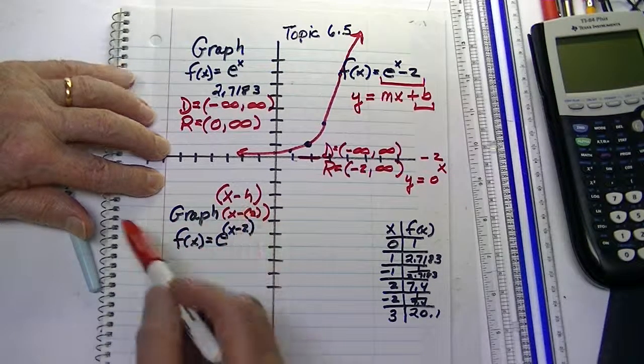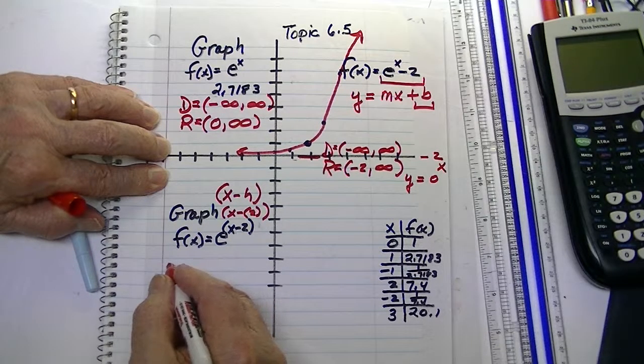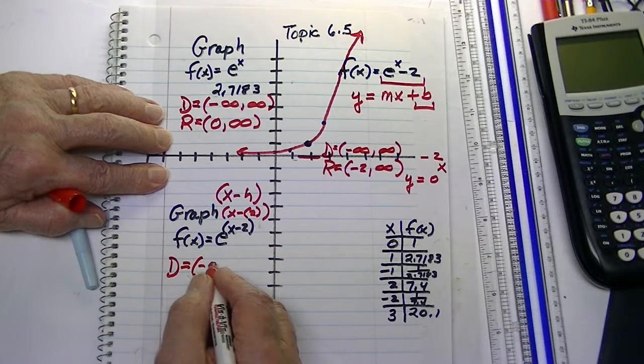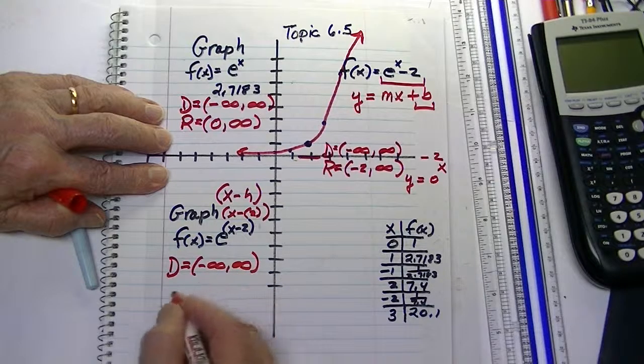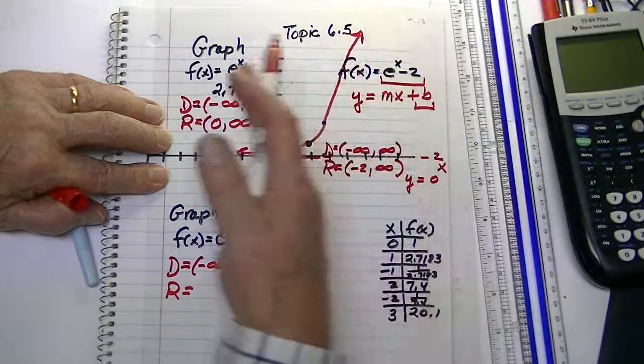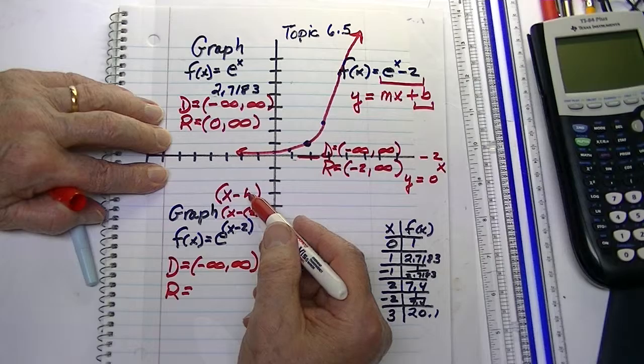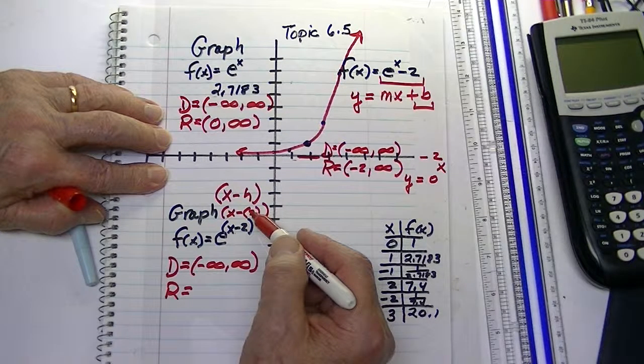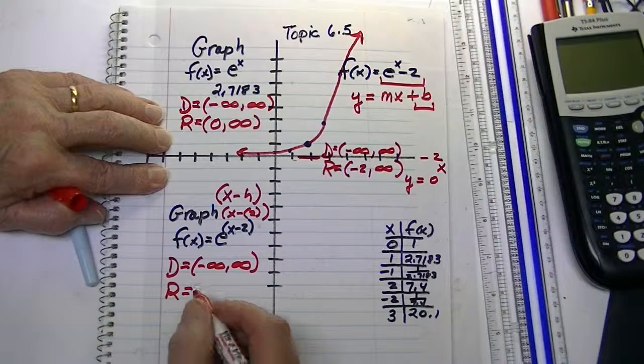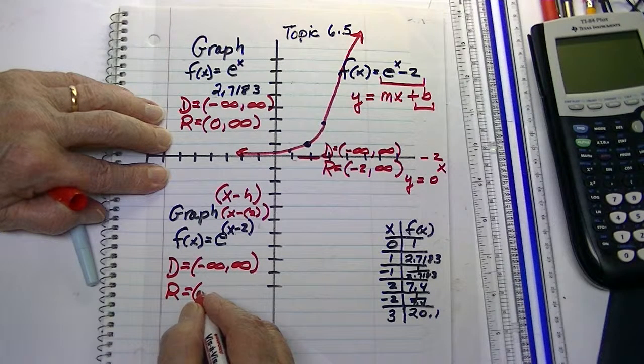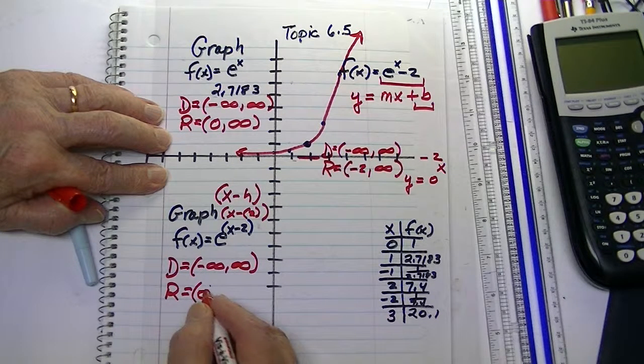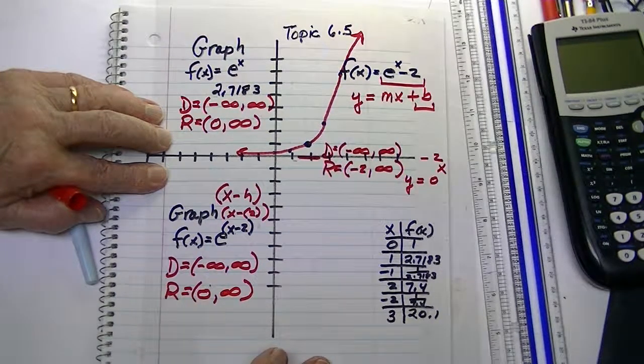Now, what is my domain and range here? Well, the domain remains unchanged. It's going to be from negative infinity to positive infinity. And the range, again, we're just shifting this horizontally. And the shortcut way is the opposite of the sign that's there. If it's a negative 2, we shift it positive 2, as I've indicated here. But our range is the same. Starts at a 0 with a parenthesis going to positive infinity.